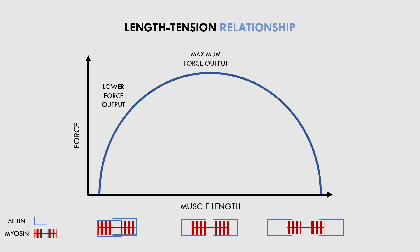This means that a maximum amount of cross-bridges can form, and force production will be optimised. When the muscle is at a lengthened position, there is minimal overlap of the actin and myosin filaments, which again reduces the opportunity for cross-bridges to form, and force production will be reduced. Therefore, the length of the muscle will influence its ability to produce force.